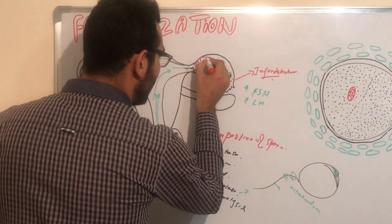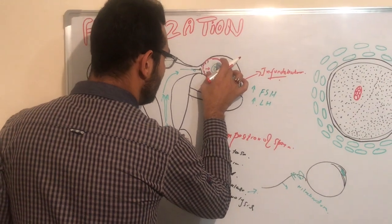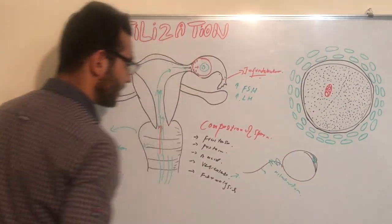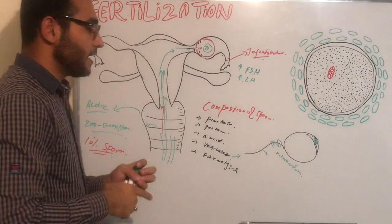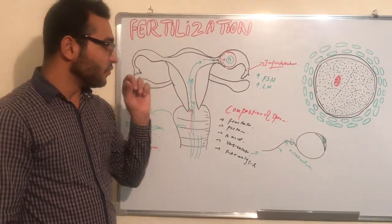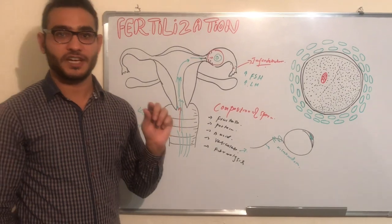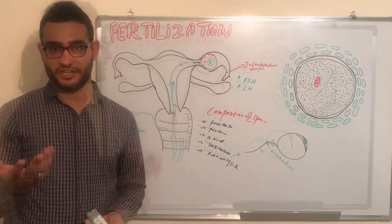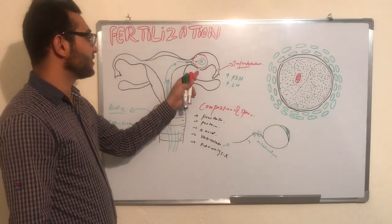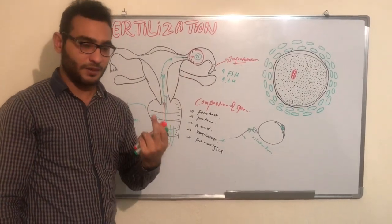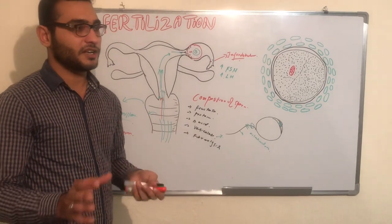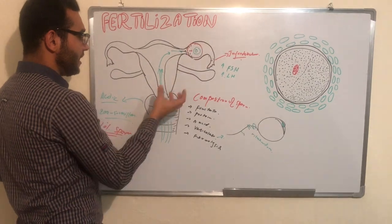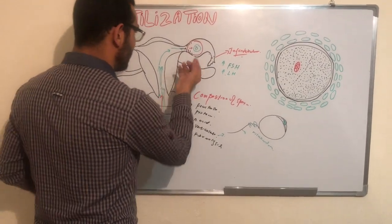These chemoattractants cause attraction of sperms toward the ovum at the site of fertilization in the fallopian tube. The most healthy sperm can reach the site of fertilization within five minutes, while some sperms take around 45 to 50 minutes to reach the ampulla region.